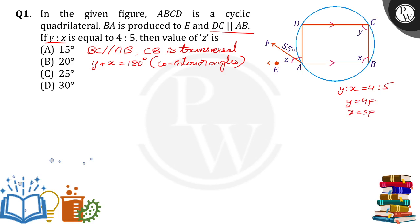Then 4P plus 5P equals 180, so 9P equals 180, which means P equals 180 divided by 9, which is 20. If P equals 20, then Y equals 4P, which is 4 times 20 equals 80. And X equals 5P, which is 5 times 20 equals 100.